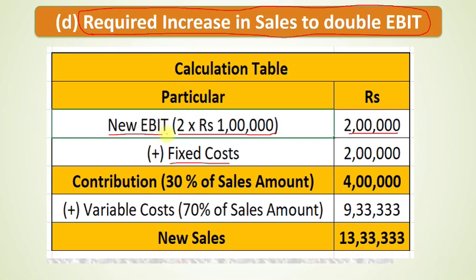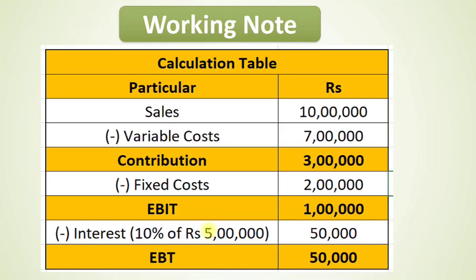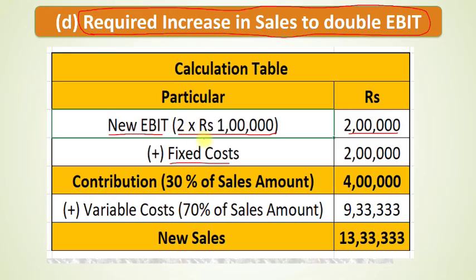We will build a new table starting from the new EBIT of 2 lakh rupees and working backwards. Fixed costs remain the same at 2 lakh rupees, so the new required contribution = new EBIT plus fixed costs = 2 lakh + 2 lakh = 4 lakh rupees. Variable cost remains 70% of sales, so contribution will be 30% of the new sales amount.